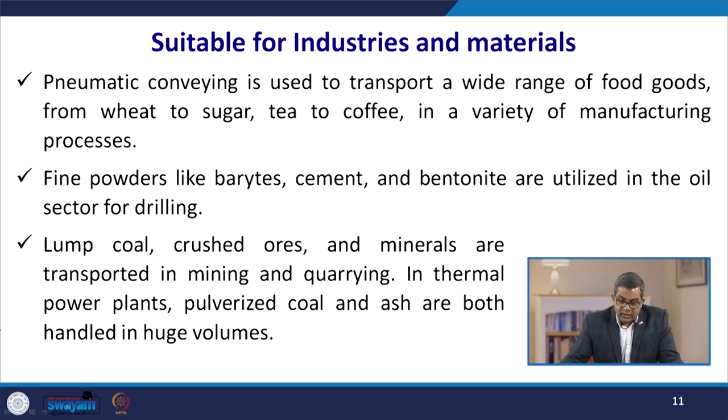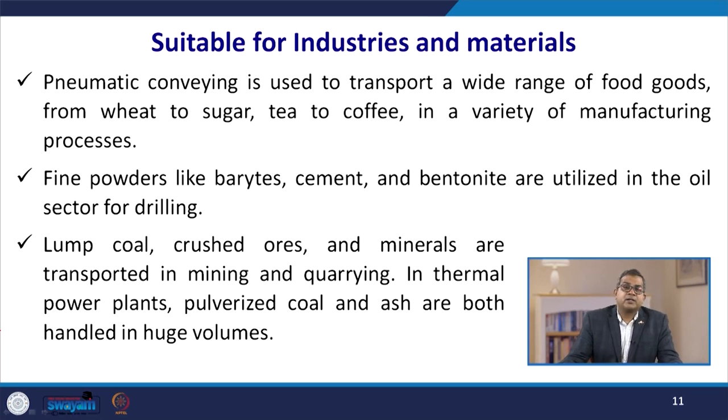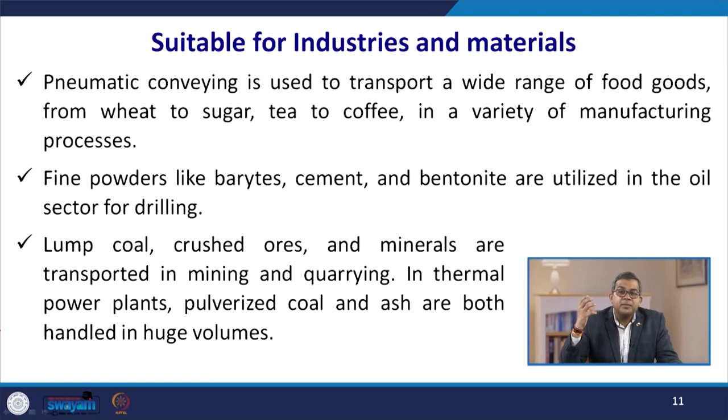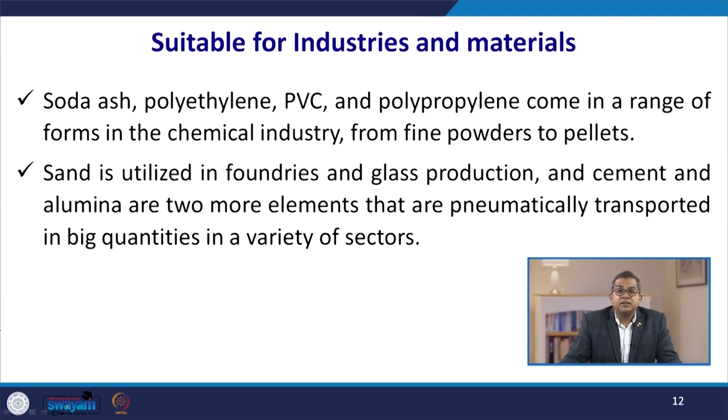Pneumatic conveying is used to transport a wide range of food goods from wheat to sugar, tea to coffee, in a variety of manufacturing processes, and these conveying systems can be installed on site easily. Fine powders like cement and bentonite are used in the oil sector for drilling and can be easily conveyed pneumatically. Lump coals, crushed ores, and minerals are transported in mining and quarrying. In thermal power plants, pulverized coals and ash are handled in huge volumes. Soda ash, polyethylene, PVC, and polypropylene — ranging from fine powder to pellet form — are used in the chemical industry. Sand for foundries, glass production, cement, and alumina are also pneumatically transported in large quantities.